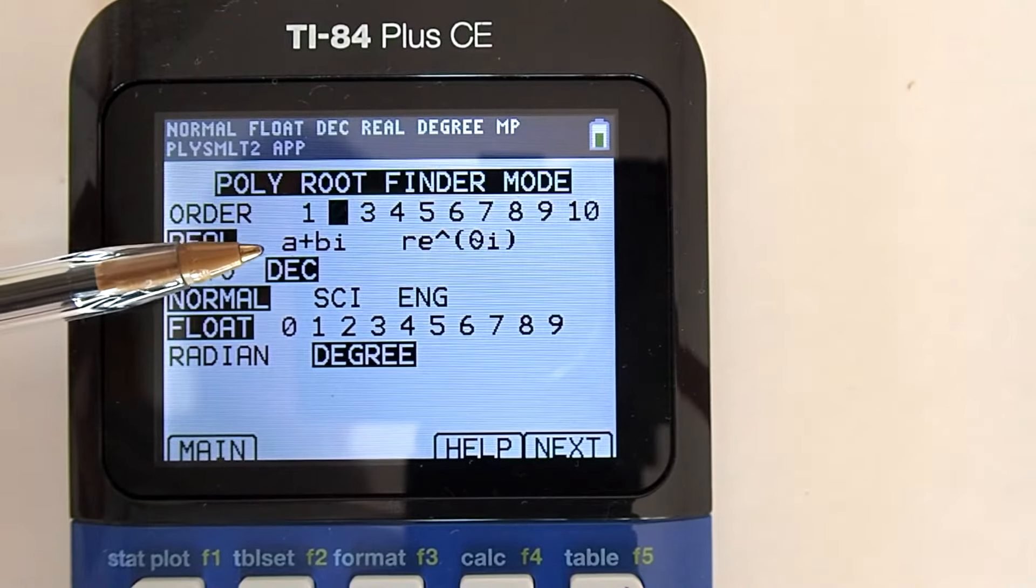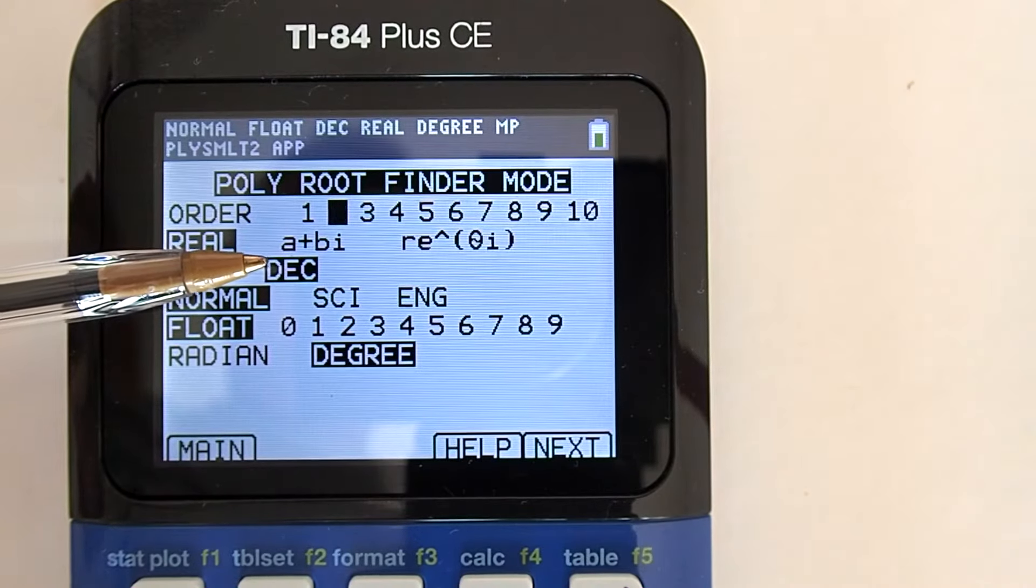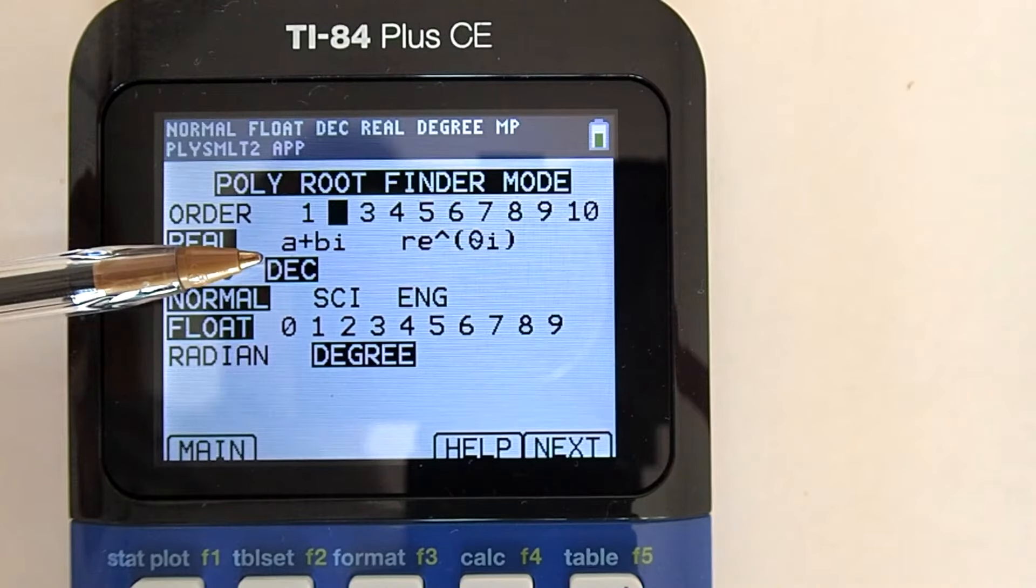To the right is an a plus bi for complex numbers. A complex number is a real number plus or minus imaginary number. If you know you are going to work with imaginary numbers with your quadratic equations, then you need to select this a plus bi.